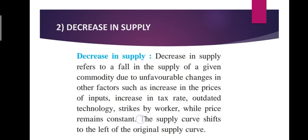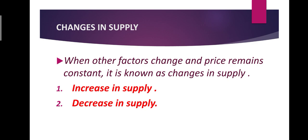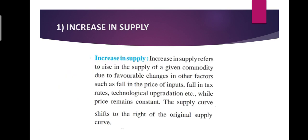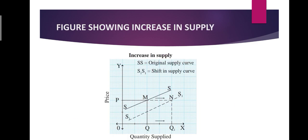So in this concept, we covered changes in supply, where price remains constant and changes come due to other factors. Supply changes in two ways: increase in supply and decrease in supply. In increase in supply, price remains constant but other factors show favorable changes — for example, prices of inputs decrease, tax rate decreases, or technological upgradation occurs. Because of this, at the same price you are in a position to increase supply. The original supply curve SS shifts to the right to a new supply curve S1S1.